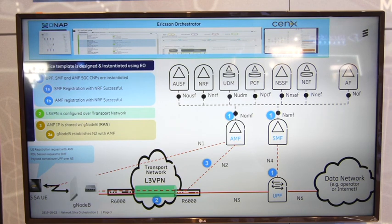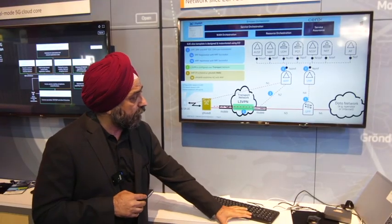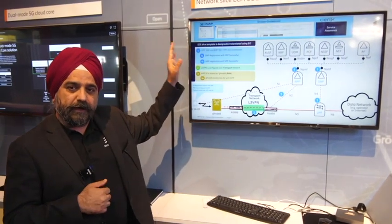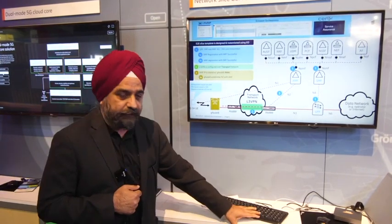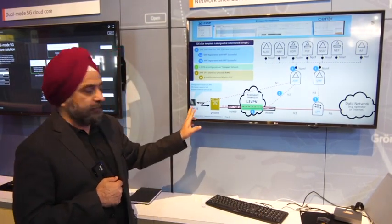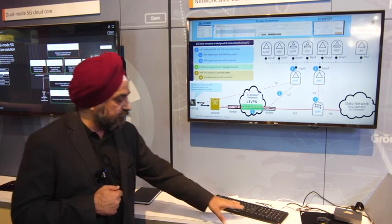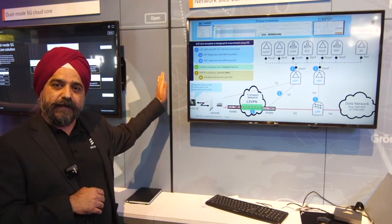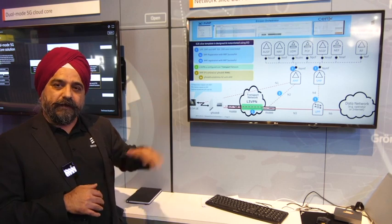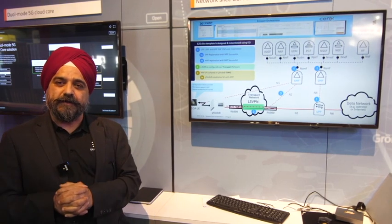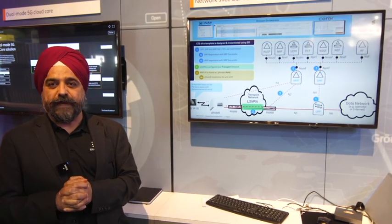So this is the first time we are doing full end-to-end network slicing. These are all physical, real software deployed in our data center. As you can see, I'm showing screenshots of the real software — this is the UE we are using, and this is the gNodeB mounted behind the wall. From an Ericsson side, we are completely ready for you to switch to 5G.